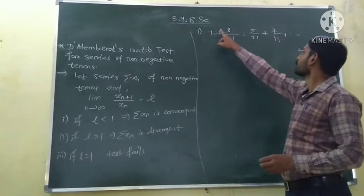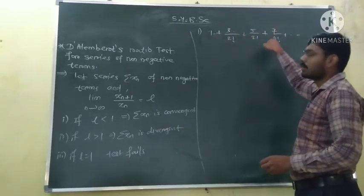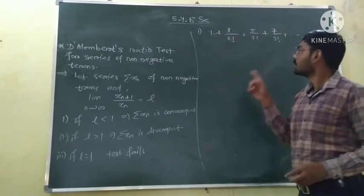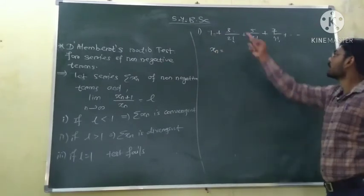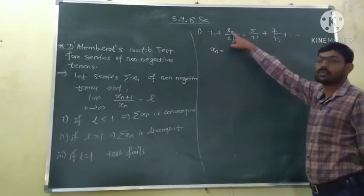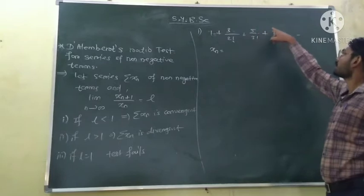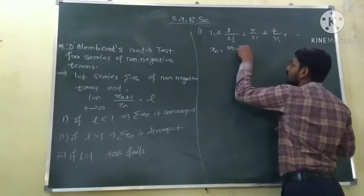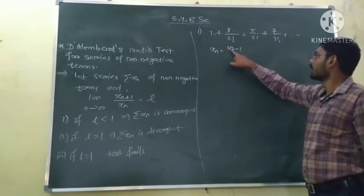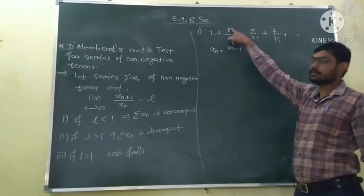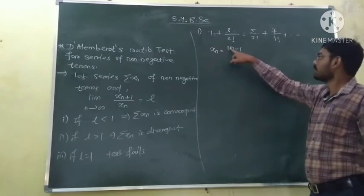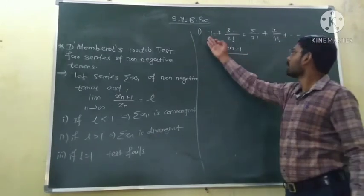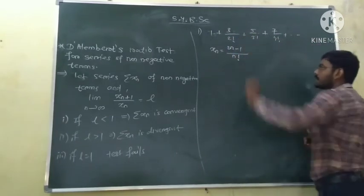Looking at the series, the numerators are odd numbers: 1, 3, 5, 7, ... and the denominators are factorials of natural numbers. The numerator for the n-th term follows the pattern 2n−1. When n=1, it gives 1; for n=2, it gives 3; for n=3, it gives 5. So the n-th term Xn equals (2n−1) divided by n factorial.